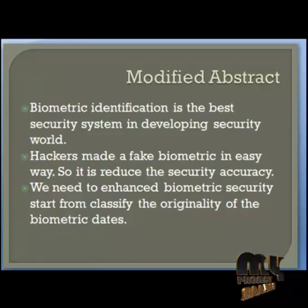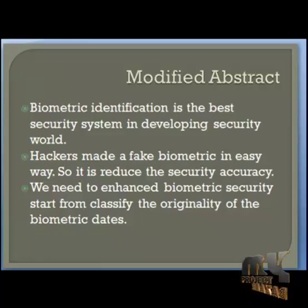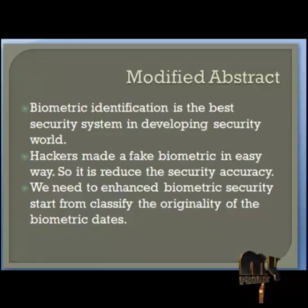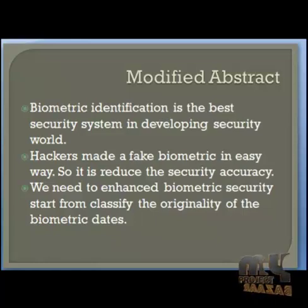This biometric system security accuracy is very low because we map the biometric details to get the identification. So we need to enhance that security system. In our project we enhance the security system by using a software-based method — image quality assessment and quadratic discriminant analysis — to detect the lack of biometric details.